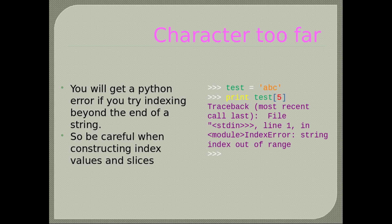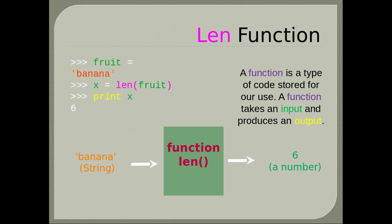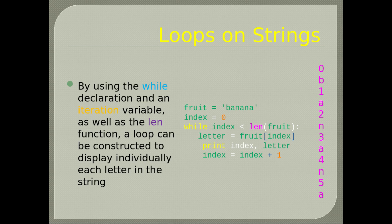Strings have length. There is an integrated len() function that returns the length of the string. By using the while declaration and an iteration variable as well as the len function, a loop can be constructed to display individually each letter in the string. This code prints both the index starting from zero to the length of the string and each corresponding letter from the string.